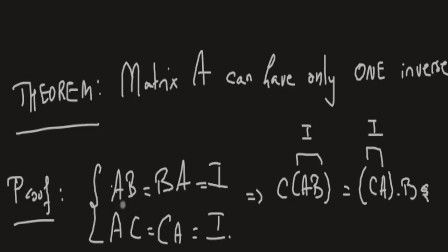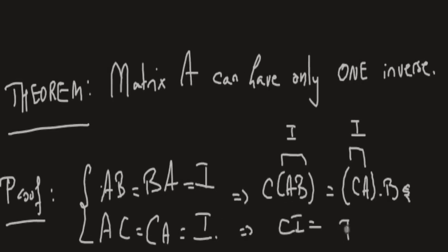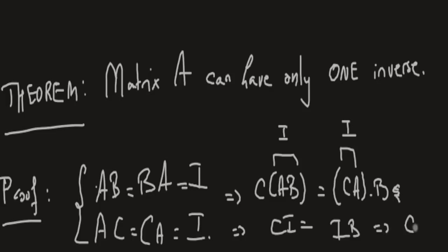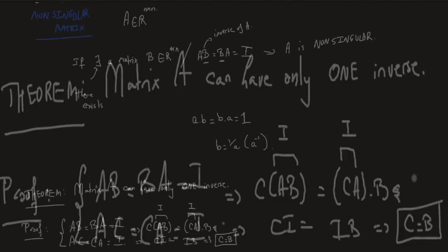That means we get CI equals IB, which means C equals B. So you assumed two matrices B and C that are the inverse of A, assuming they're different, but they turn out to be the same. We didn't get a contradiction — we got uniqueness, which is what we need. So if you have an invertible matrix, its inverse is unique.